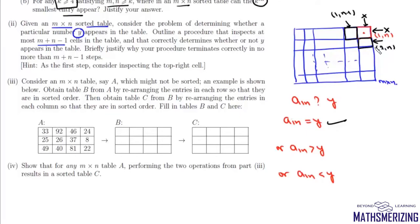Repeating this process, after m+n−1 inspections we have either found the location of y or eliminated all rows and columns if y does not appear in the table. Part 3 considers an m×n table which might not be sorted. We obtain table b from table a by rearranging the entries in each row so that they are in sorted order.